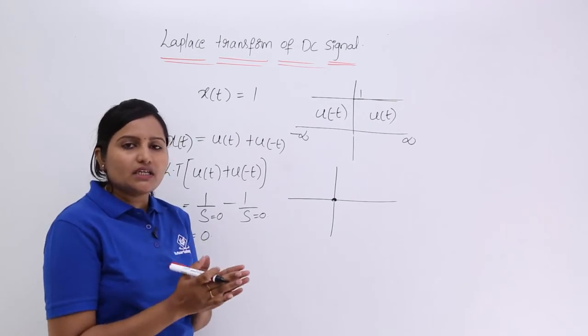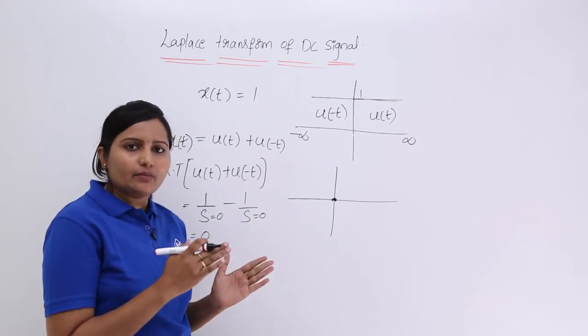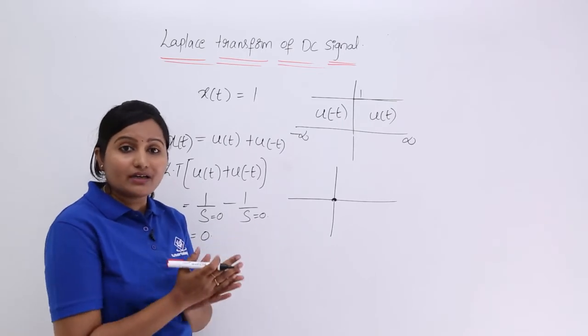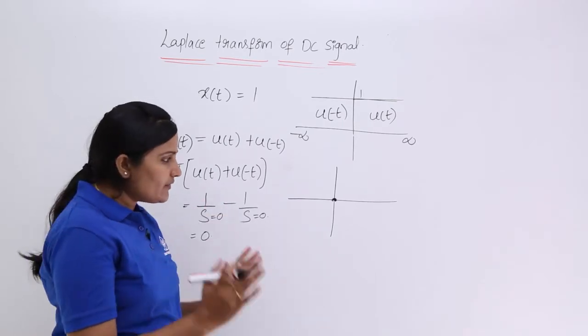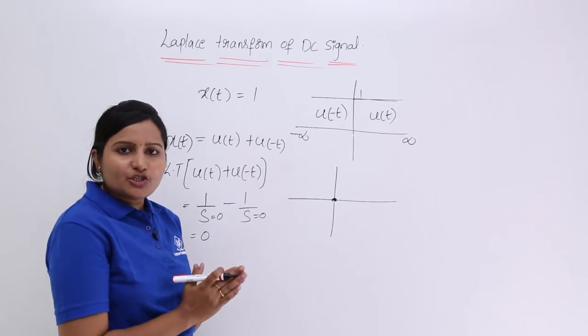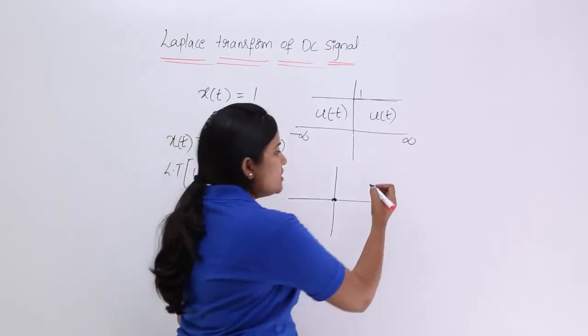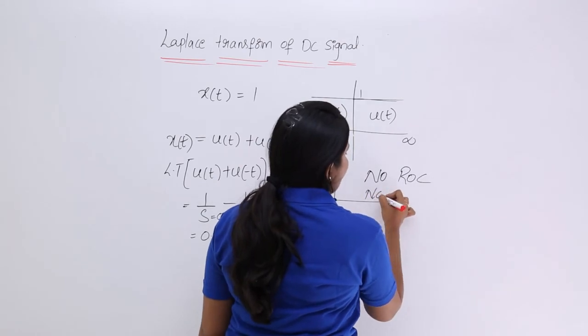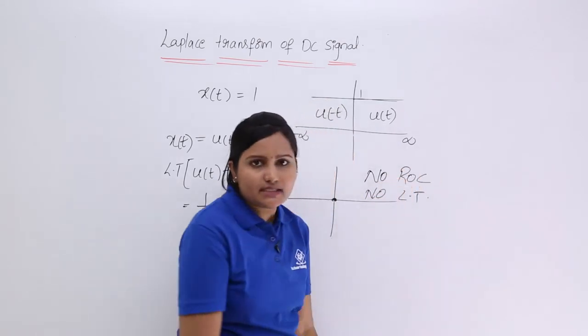When any two signals are purely rightly and purely left sided sequences we cannot say there is common region of convergence. So definitely the common region of convergence is not there. So there is no ROC and no Laplace transform for the DC signal.